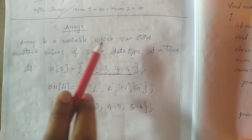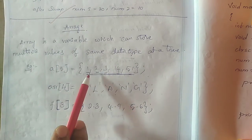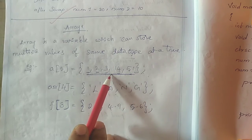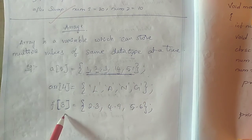Array is a variable which can store multiple values at a time with similar data type. This is the definition of array.